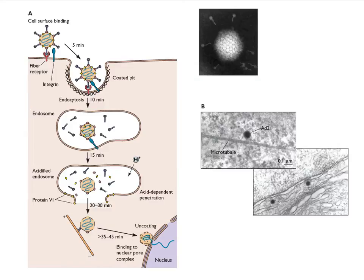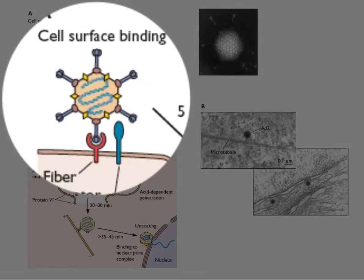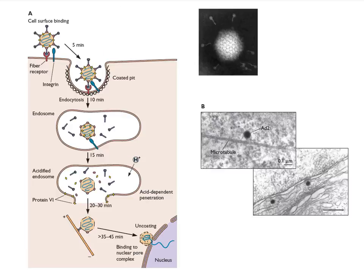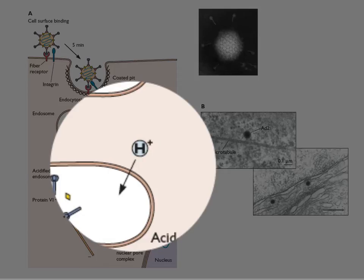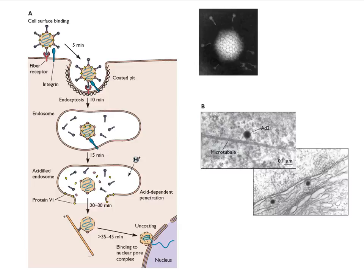Another paradigm I want to show you is how a non-envelope virus gets out of the endosome. Here is adenovirus. Remember, this is binding to cell receptors by these fiber receptors here. They're taken up by endocytosis. They end up in an endosome, and as the pH drops in the endosome, the particle begins to disassemble.